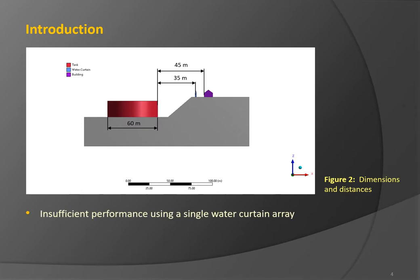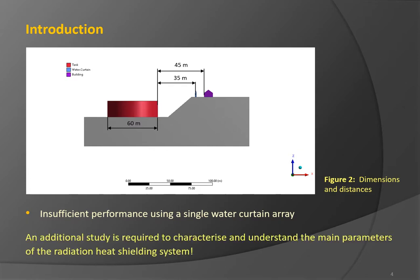According to preliminary studies and conducted tests, it appears that a single water curtain array is insufficient to lower the irradiation to the desired level. Therefore, an additional study is required to characterize and understand the main parameters of the radiation heat shielding system, in order to improve the performance of the water curtain arrangement by either changing its current operating conditions or installing an additional row of water sprinklers.